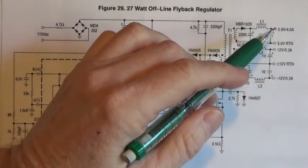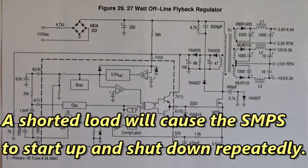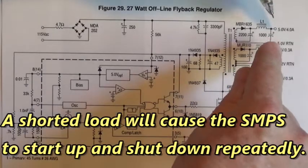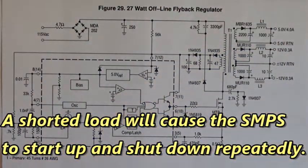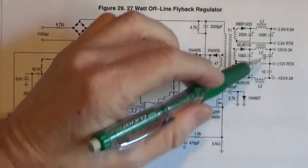Now you will find shorts out here. The load will be shorted. So throw your meter from ground to 5 volts and see if you have a short circuit right there. Do the same for the plus and minus voltages down here.